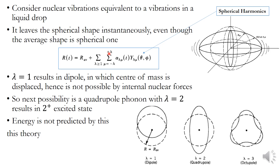R(T) is equal to R_average plus the sum over λ and μ of α_λμ × Y_λμ. Here R_average is the radius of the average spherical nucleus, α_λμ is the deformation on that average radius, and Y_λμ are the spherical harmonics — equivalent to the Y_lm used in the atomic case.